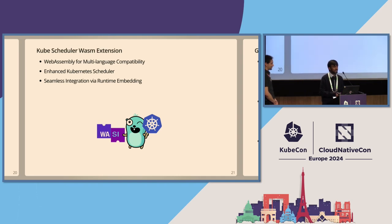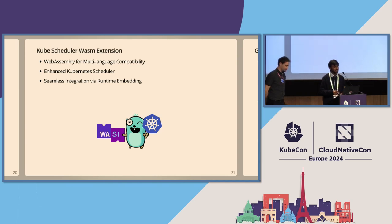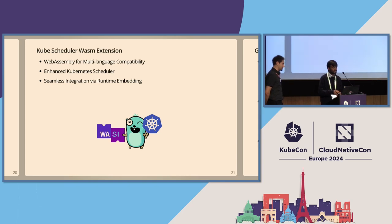By embedding the WebAssembly runtime — like Wazero — directly into the scheduler, the process of incorporating custom plugins becomes very streamlined. Configuration-based loading of these plugins further simplifies the customization process for users. Today, we can extend the kube-scheduler using a scheduling framework, but it's not trivial — once you develop your scheduler, there is additional deployment and configuration work to integrate it into your cluster. And this is not a one-time task; it needs to be repeated for every cluster upgrade. The kube-scheduler WASM extension project alleviates this burden by enabling the default scheduler to load custom plugins in WASM.